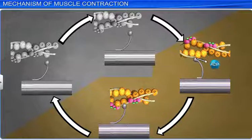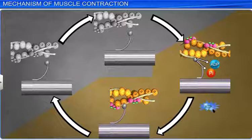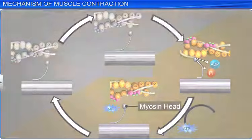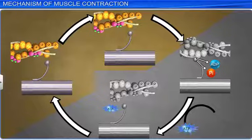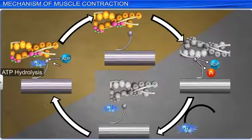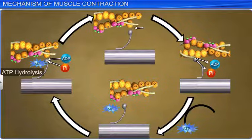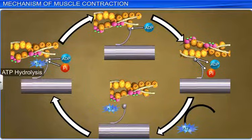The myosin then releases ADP and inorganic phosphate to go back to its relaxed state. A new ATP binds to the myosin head and the cross bridge is broken. The myosin head again hydrolyzes ATP and forms a cross bridge. The stages of cross bridge formation, rotation of myosin head, and cross bridge breakage are repeated with different or new actin molecules to cause further sliding.